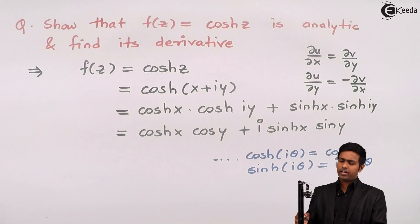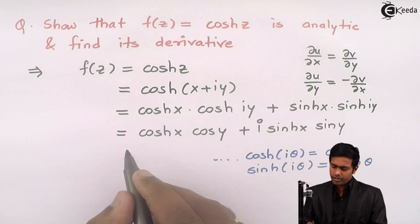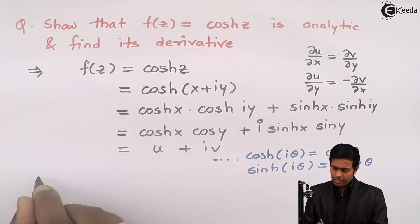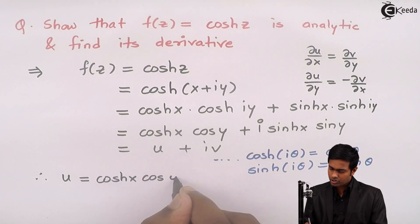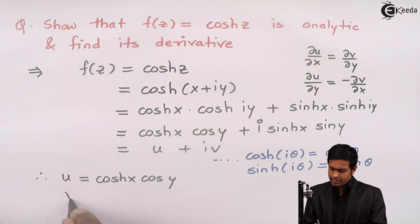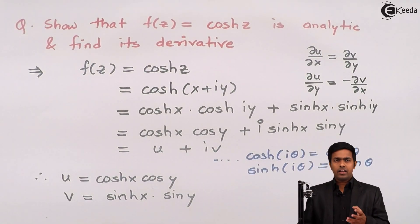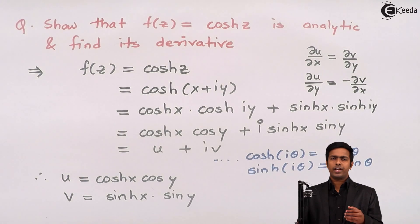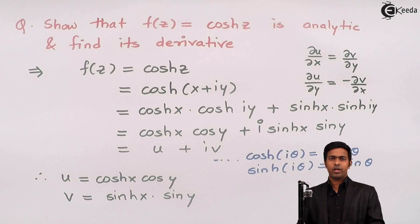So now if you observe carefully, the expression is in the form u + iv. Therefore u = cosh(x)·cos(y) and v = sinh(x)·sin(y). We have obtained the values of u and v. Now we will prove the Cauchy-Riemann equations by finding the four partial derivatives: ∂u/∂x, ∂u/∂y, ∂v/∂x, and ∂v/∂y.